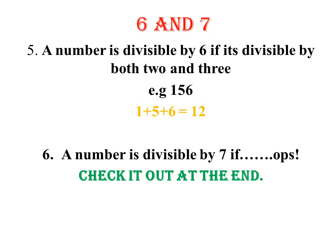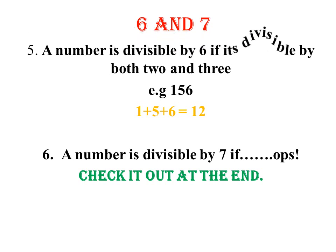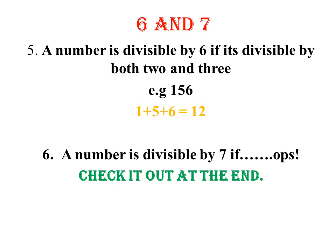Next we have 6. A number is divisible by 6 if it is divisible by both 2 and 3. The rule is the number should be divisible by both 2 and 3, and remember the rules we follow: for 2, the last digit should be even; for 3, the sum of the digits should be a multiple of 3. Looking at our example, the last digit is 6, which is even, so it is divisible by 2. And the sum of the digits — 1 plus 5 plus 6 is 12 — and 12 is also a multiple of 3.